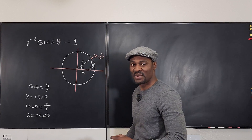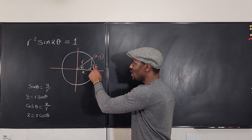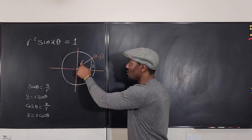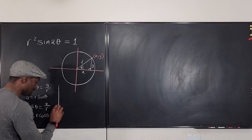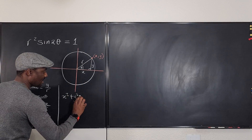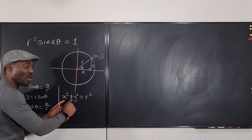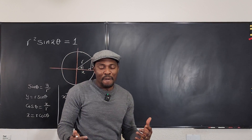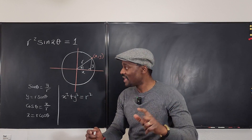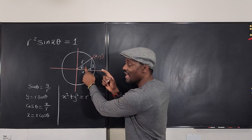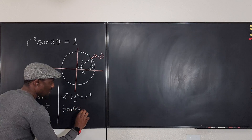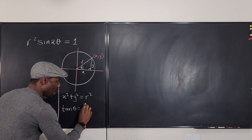Going back to the Pythagorean theorem: if you want to find any of the three sides in a right triangle, the square of this plus the square of this gives you the square of the hypotenuse. So x squared plus y squared equals r squared — you can replace r squared with that. One last thing: the fastest way to connect x and y is tangent, so tangent theta equals y over x.